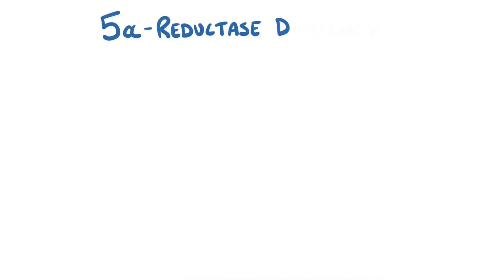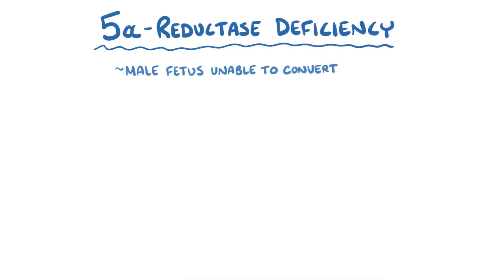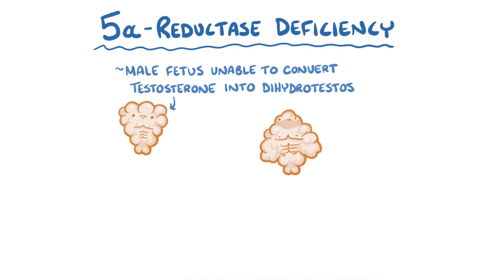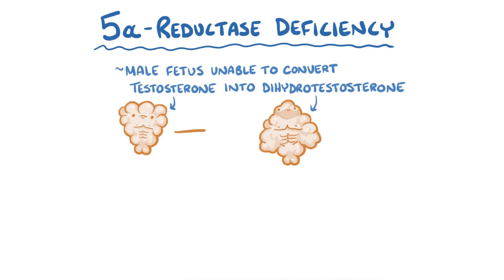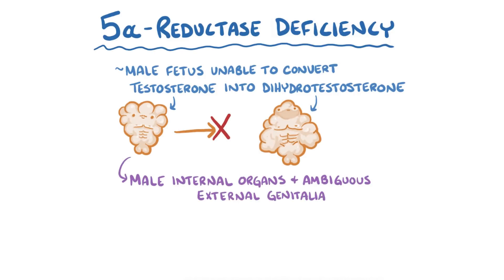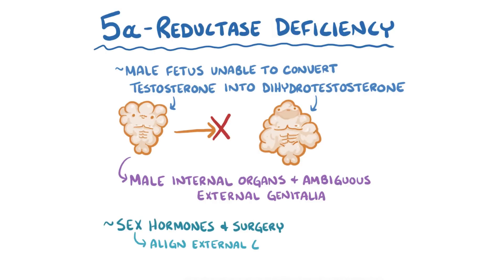As a quick recap, 5-alpha-reductase deficiency results in a male fetus being unable to convert testosterone to its more active form, dihydrotestosterone. This leads to male internal organs and ambiguous external genitalia. Both sex hormones and surgery can be done to help align the external genitalia with the gender identity adopted by the individual.